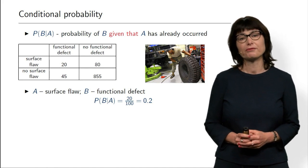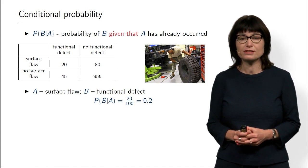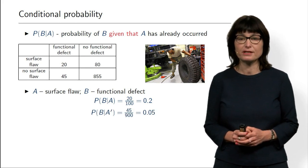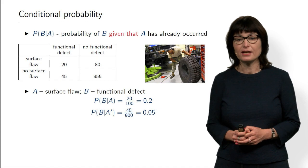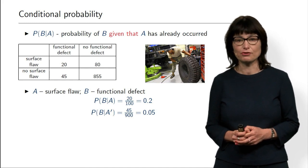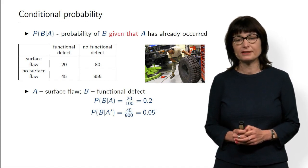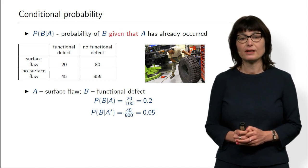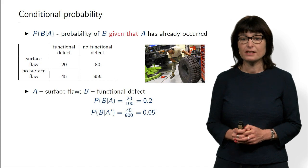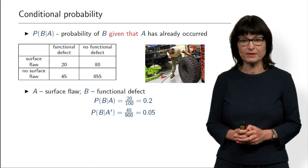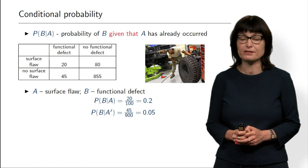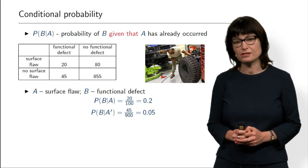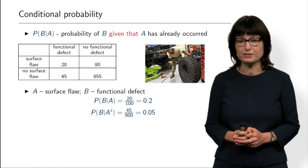We can also see: what if there is no surface flaw, then what is the probability of functional defect? That is the conditional probability of B given not A. We have 900 tires with no surface flaw and 45 out of them have a functional defect. So the probability of B given not A is 45 divided by 900 — just 5%, compared to 20% before.